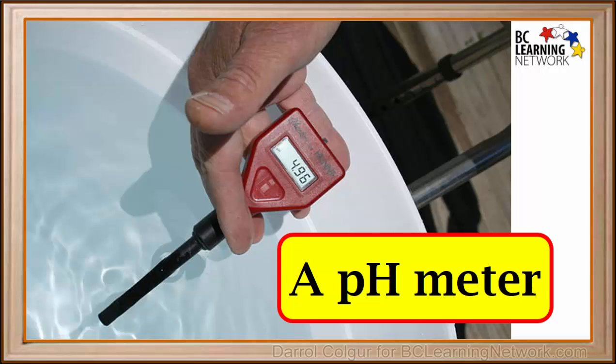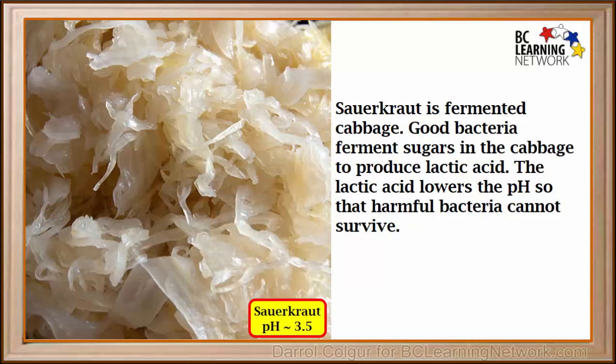pH is very important when it comes to our foods and how well they keep without spoiling. Sauerkraut is fermented cabbage. Beneficial bacteria ferment sugars in the cabbage to produce lactic acid. The lactic acid lowers the pH. At low pH levels, harmful bacteria that spoil foods cannot survive.